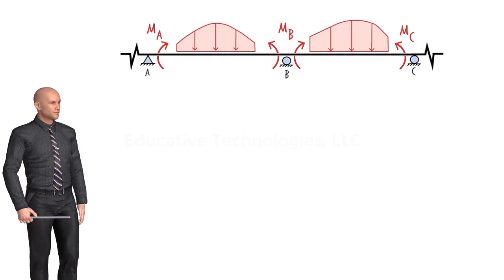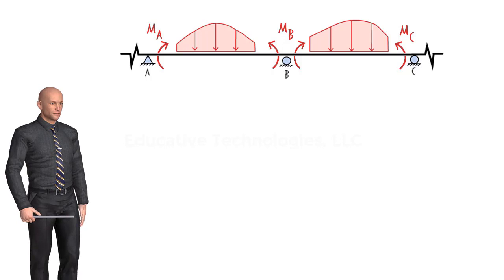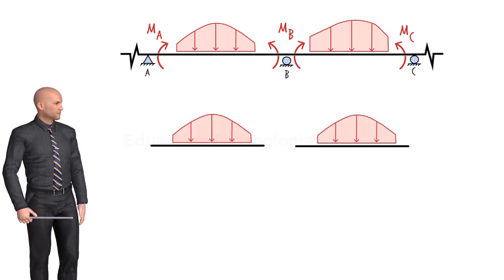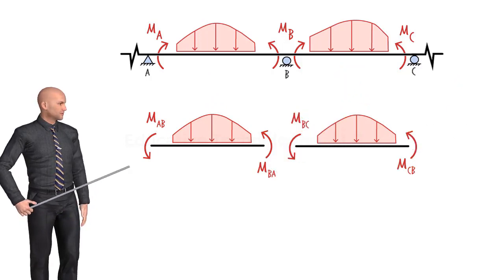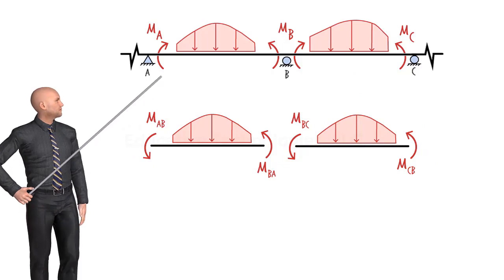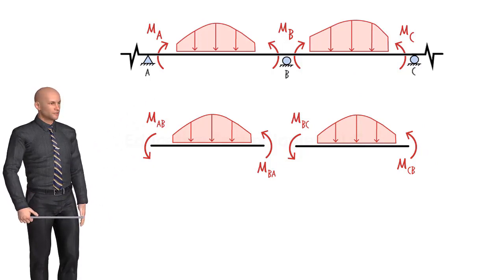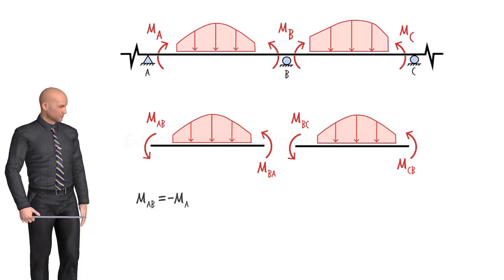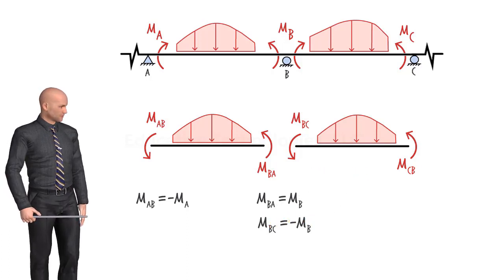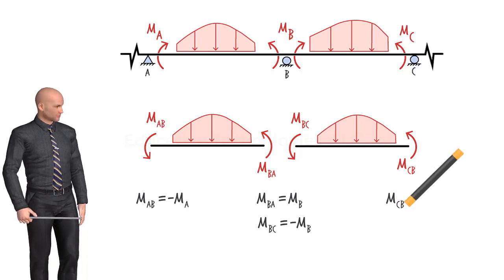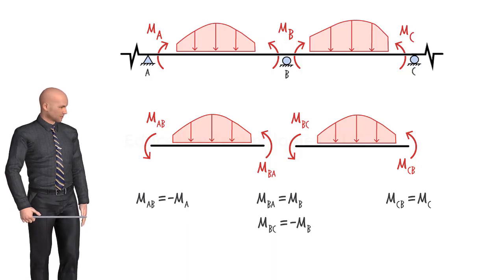These moments are shown in the directions that cause each beam segment to bend concave up. But in the slope deflection method, the member end moments are shown in the counterclockwise direction. Therefore, we need to relate these two sets of moments. Comparing the two diagrams, we can write: MAB equals negative MA, MBA equals MB, MBC equals negative MB, and MCB equals MC. Therefore, the joint equilibrium equations follow.